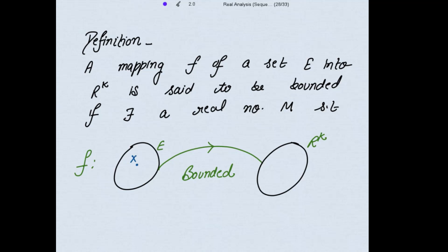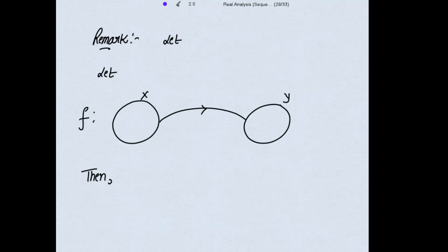A mapping f of a set E into R^k is said to be bounded if there exists a real number M such that the modulus of f(x) is less than or equal to that real number M for all x belonging to E. And there are some important results I need to write which are used in proving the theorem.